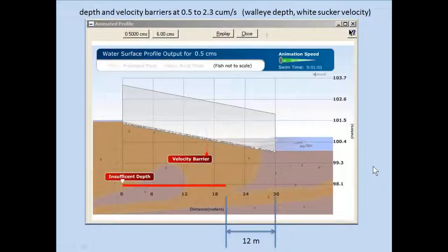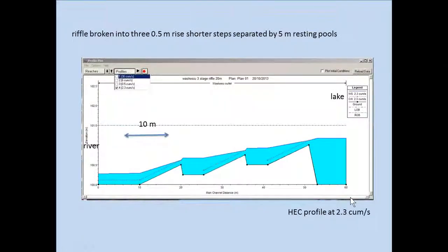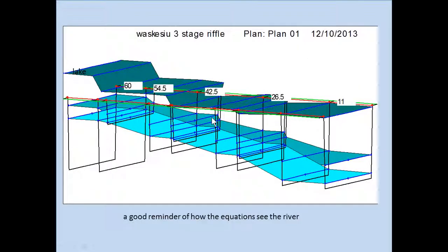Instead of one long 30-meter riffle, what if you broke it into three 10-meter riffles separated by 5-meter pools? You can calculate this longhand, or put cross sections into HEC-RAS and it does all calculations for you, showing the profile: 10-meter riffle, 5-meter pool, another 10-meter riffle, 5-meter pool. These are schematics - HEC-RAS simplifies how the river behaves, but we know it's way more complex. It's good enough to make calculations without going through all the detailed hand calculations. You could also use the Australian SHOUT program or Fish Crossing - which lets you test fish species against the hydraulic conditions to check for depth or velocity barriers.